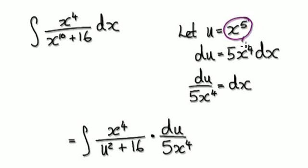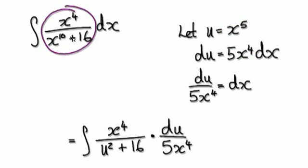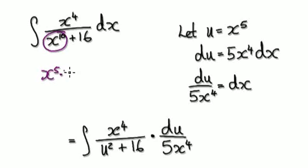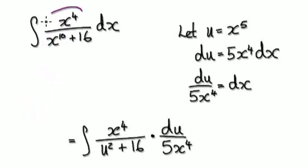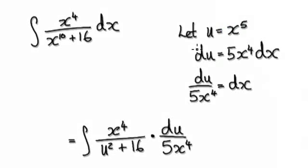Because when you differentiate it, it will give you this x to the power of 4. So looking at this, if you break this up as x to the power of 5 times x to the power of 5, if you differentiate this one thing, it will give you 5x to the power of 4. This x to the power of 4 will later cancel out. So hopefully you can develop a hunch that you should make u to be x to the power of 5.